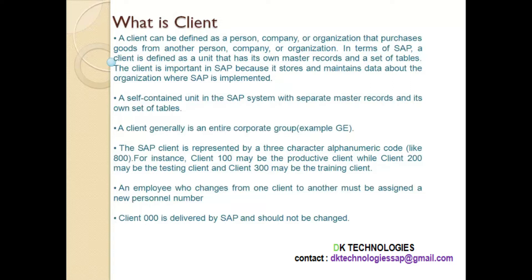For example, we are logged into client 800. This client 800 will have its own master records and its own set of tables. If an employee changes from one client to another client, then that employee must be assigned a new personal number in the different client. Client 000 is delivered by SAP and this should not be changed.